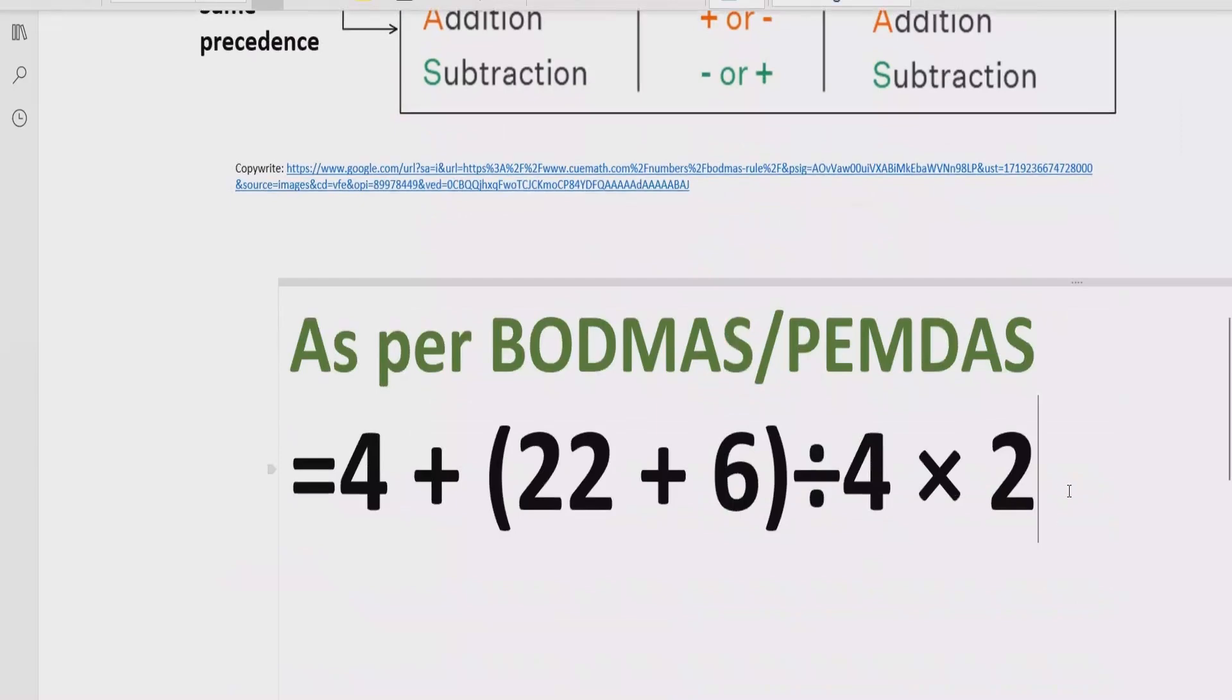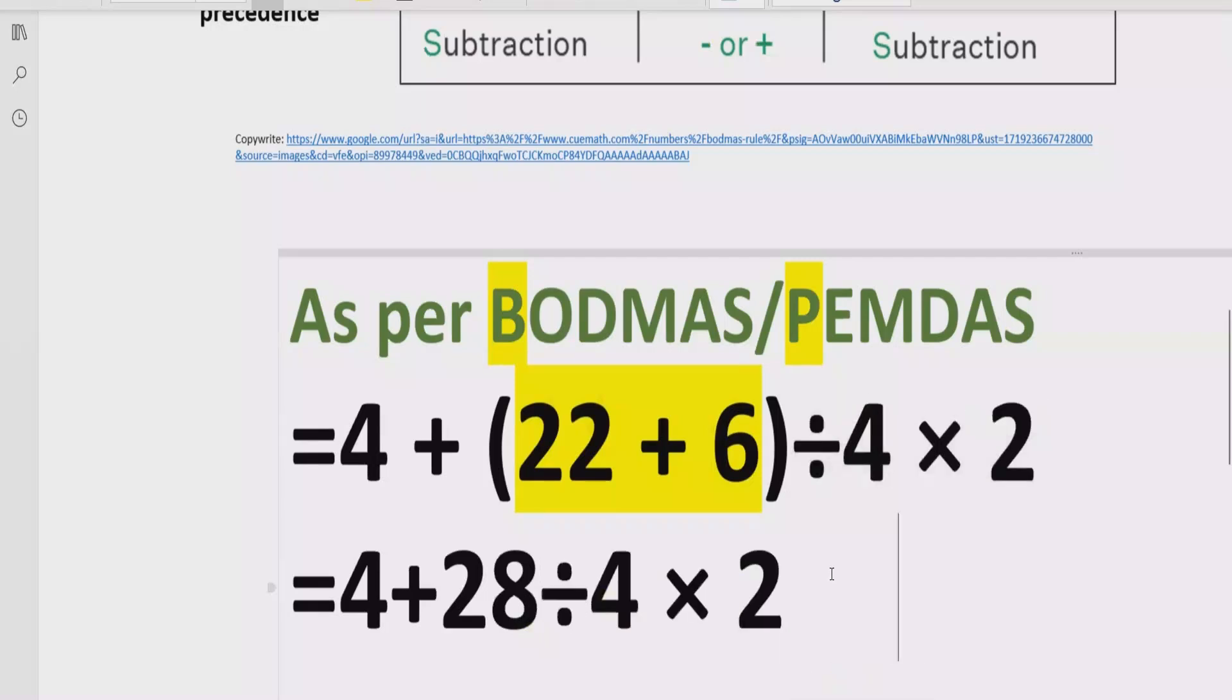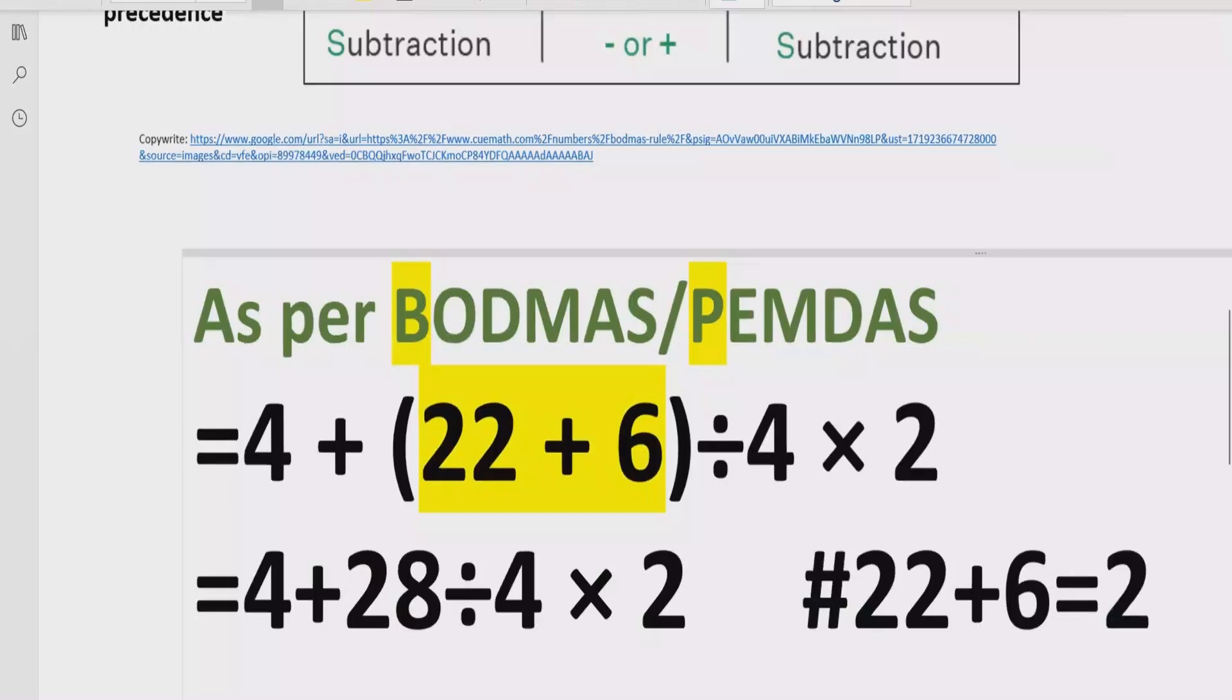Now, move forward to solve the given expression. According to the BODMAS and PEMDAS rule, first of all, we have to solve the bracket. So here we have one bracket which is 22 plus 6 equals to 28, divided by 4 and multiply by 2. We will write as it is, and here we will give the reference 22 plus 6 equals to 28.